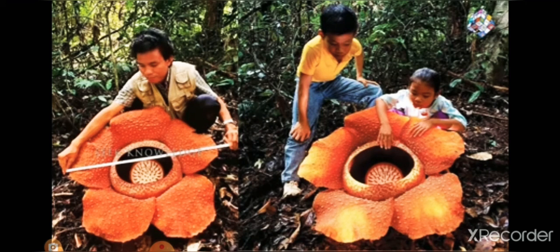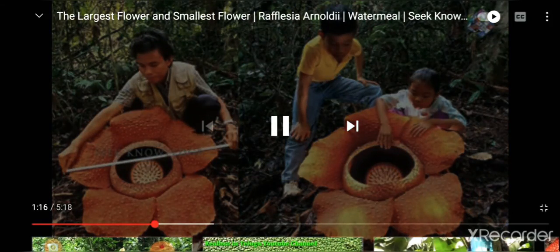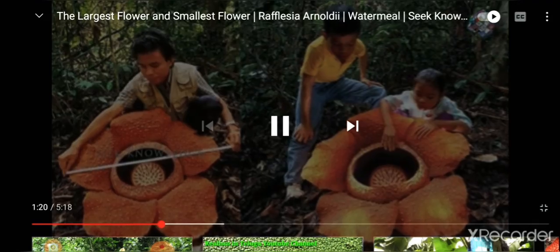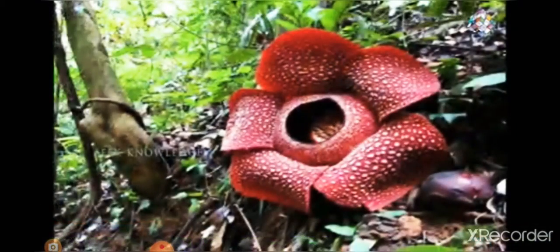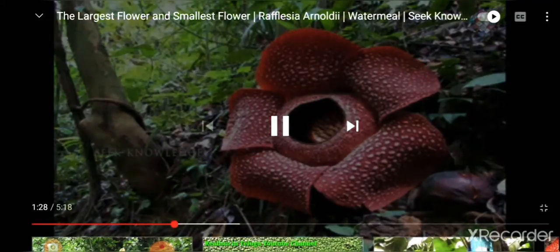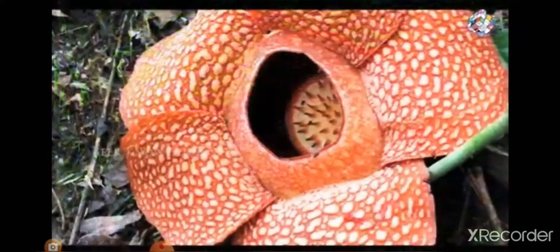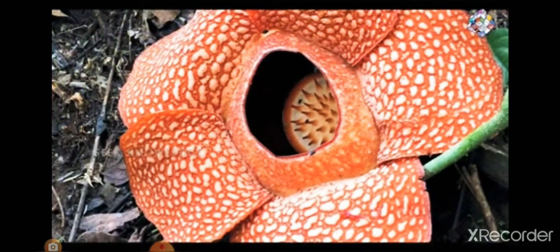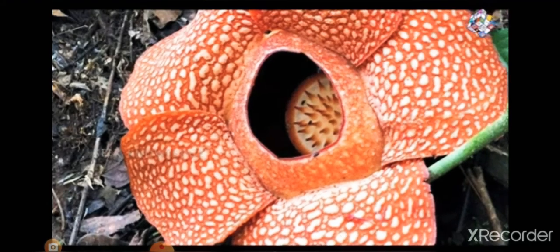Rafflesia arnoldii weighs up to 11 kilograms. The Rafflesia does not have a chloroplast genome and therefore is incapable of photosynthesis. Instead, the Tetrastigma vine that hosts the flower provides its nutrients and food. The Rafflesia uses small filaments to extract nutrients and water from the host vine. The bloom is hollow at the center and white and red spotted with five petals.